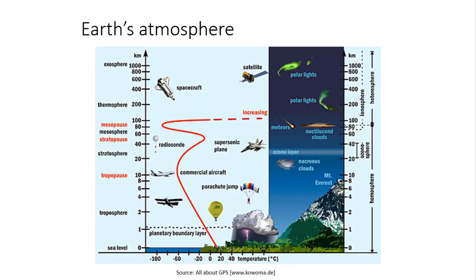Earth atmosphere: These are the topologies where the troposphere, stratosphere, mesosphere, thermosphere, and exosphere are used for different applications at different altitudes from the Earth's surface. Satellites fall in the category of the exosphere, which is at the highest end from the Earth's surface. From this diagram it is clear where exactly a parachute can jump, where commercial aircraft can fly, where military aircraft can fly, where spacecraft can fly, and where satellites can fly.